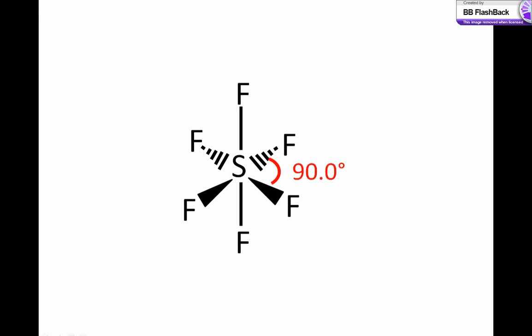In terms of a 2D representation of this, we draw fluorine atoms above and below sulfur in the plane of the screen, and then two fluorine atoms coming out of the screen as solid wedges, and two fluorines going away from us as dashed wedges. The bond angles are 90 degrees throughout.